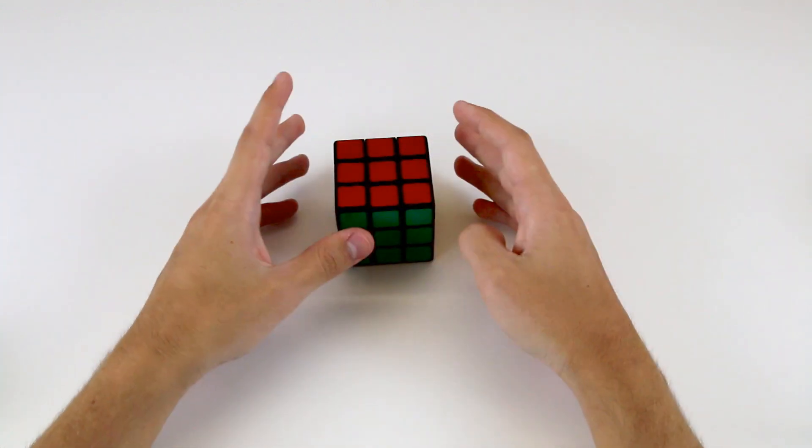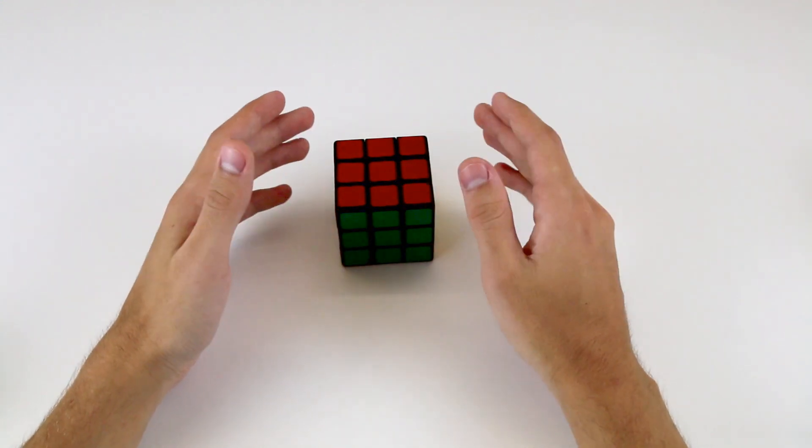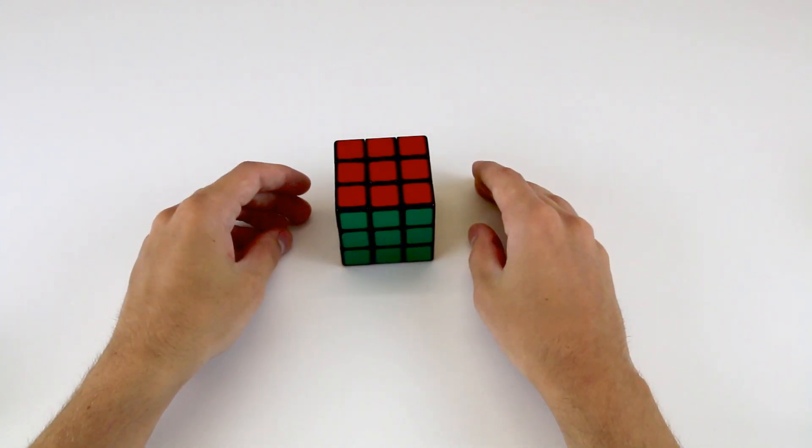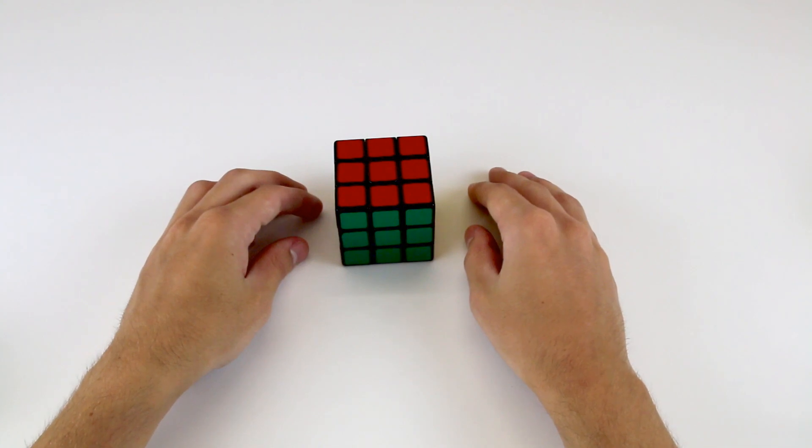In fact, the cube is made up of three different types of pieces, and there are only 26 pieces in total on the puzzle. So allow me to disassemble the Rubik's Cube to show you this.